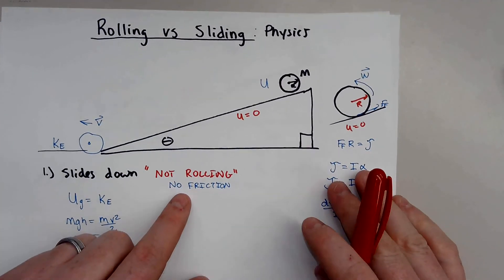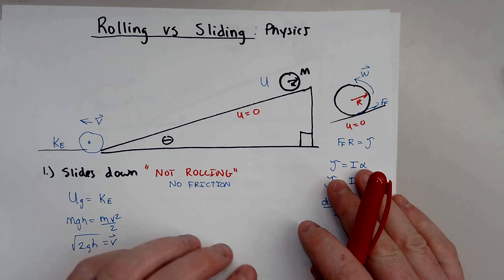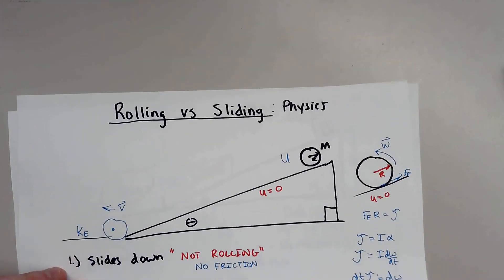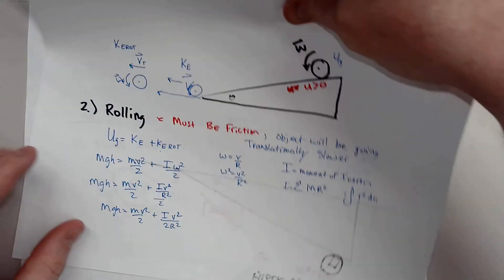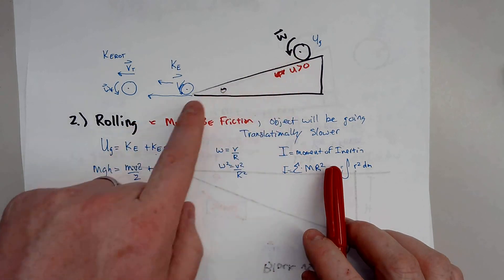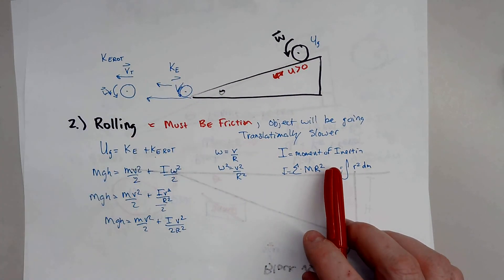Just remember, there has to be, when the object is sliding, there's no friction, nothing at all. The object is just falling down. You'd use typical conservation of energy. But if there is friction being involved and then some object is rolling, it's losing energy to kinetic energy rotational.